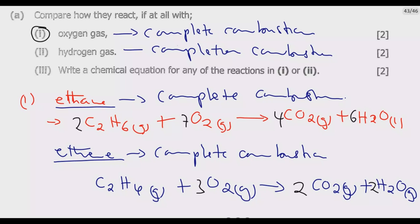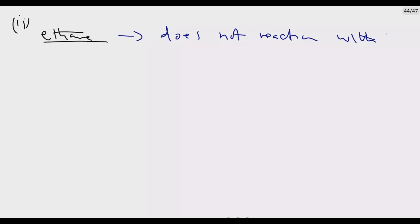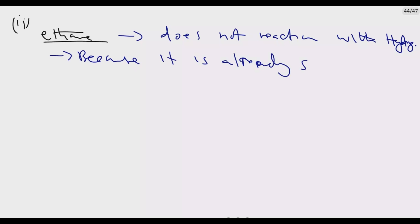Moving to part 2 — reaction with hydrogen gas. Ethane does not react with hydrogen gas under normal conditions. This is because Ethane is already a saturated hydrocarbon, meaning it has the maximum number of hydrogen atoms bonded to carbon atoms — it is already saturated.